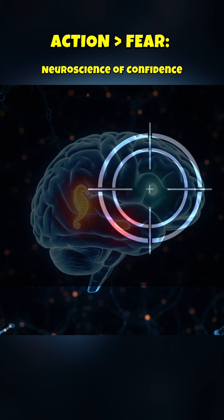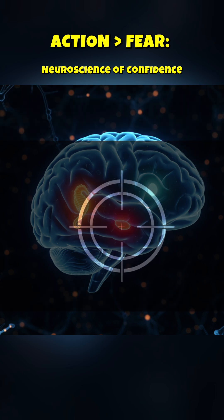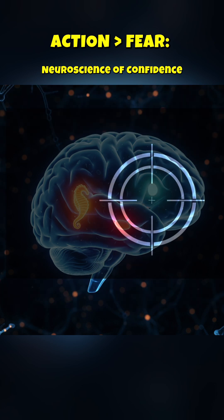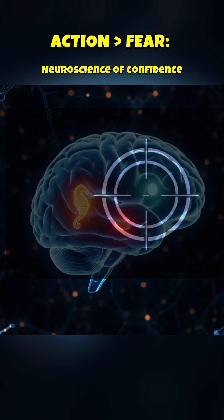So, how do we shift from the anxious amygdala to the calm prefrontal cortex? The answer lies in repetition and predictability.